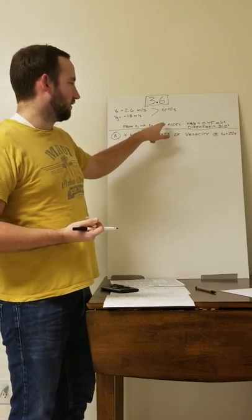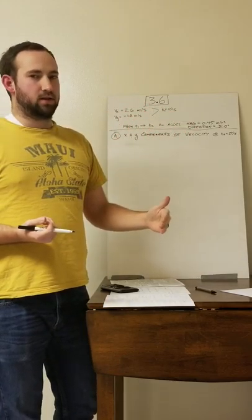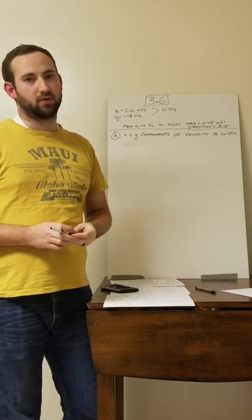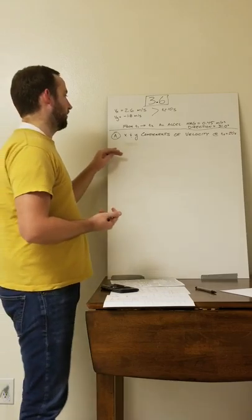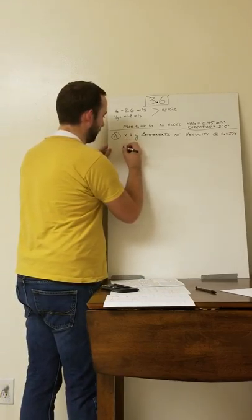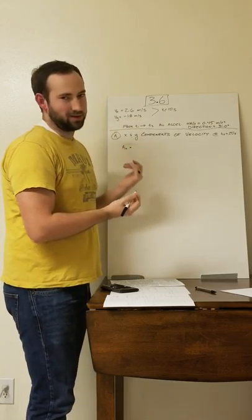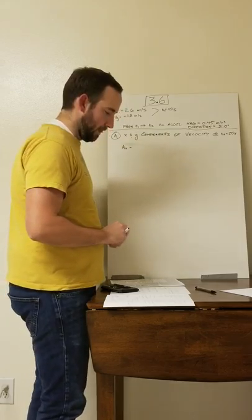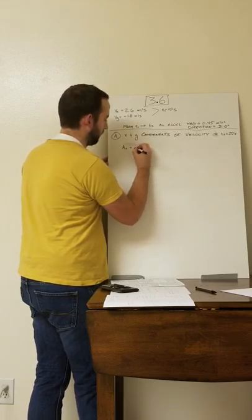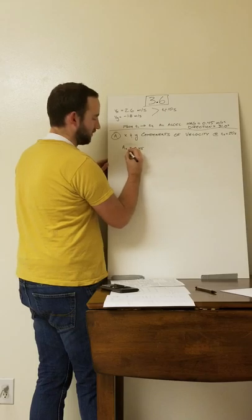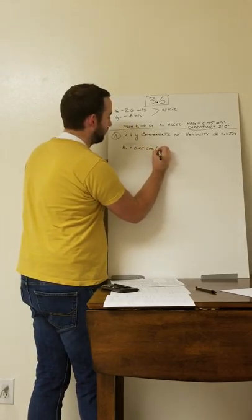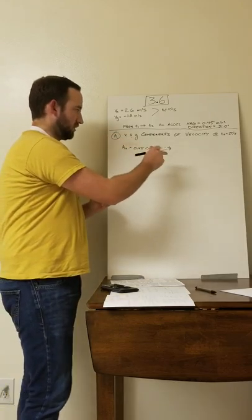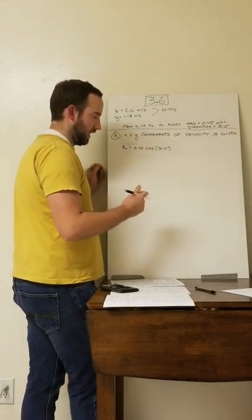Since we've been given an average acceleration, we can't go straight to the velocity. What we're going to do is use the information about the average acceleration and break it down into components. Starting with the x-component: ax equals the magnitude, 0.45 meters per second squared, times cosine of 31 degrees. When we calculate that, we get 0.386 meters per second squared.